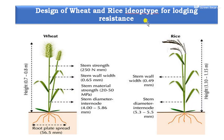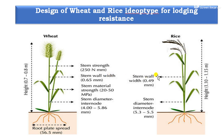The design of wheat and rice ideotype for lodging resistance was developed especially during the Green Revolution around 1965. In the case of wheat, traits improved include root plate spread up to 56.5 mm, stem strength, stem wall width, stem material strength, and internal stem diameter. For rice as well, the height is reduced; stem wall width is wider, stem diameter and internal diameter are improved, and root plate spread is up to 60 mm. These details describe how to design wheat and rice ideotypes for lodging resistance.